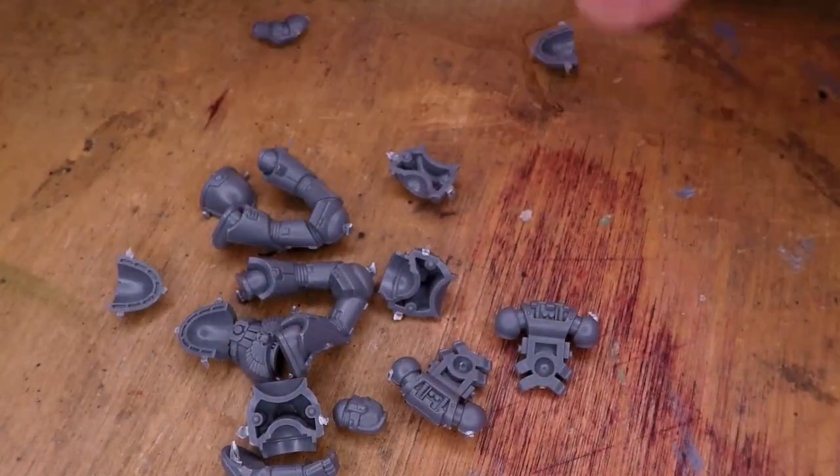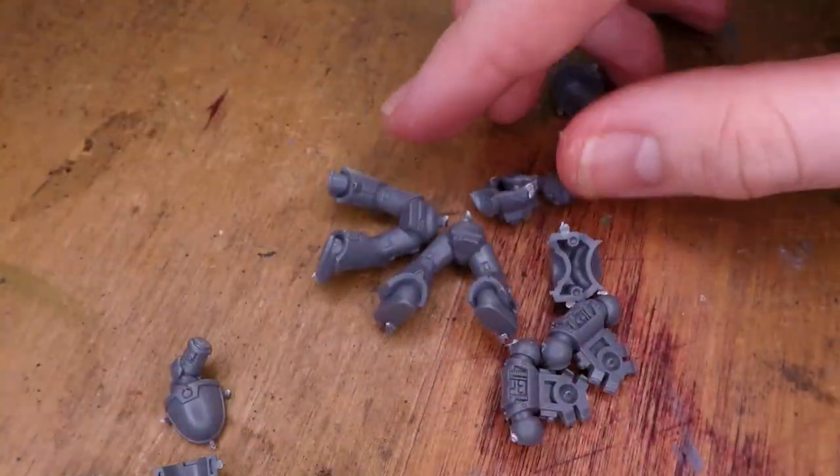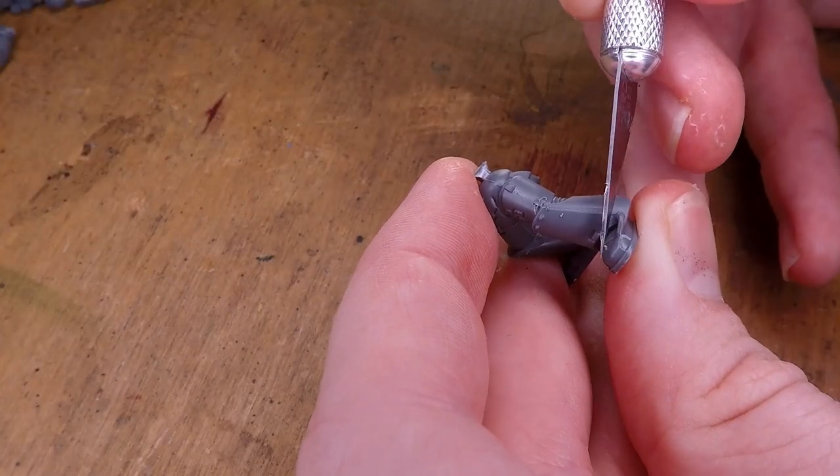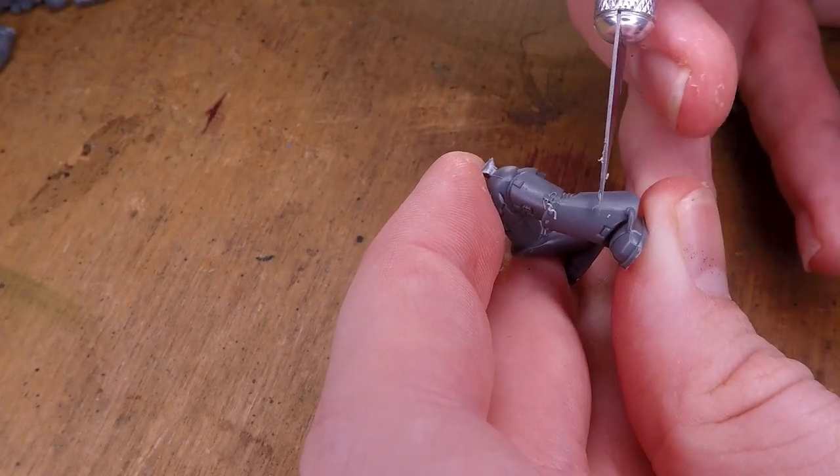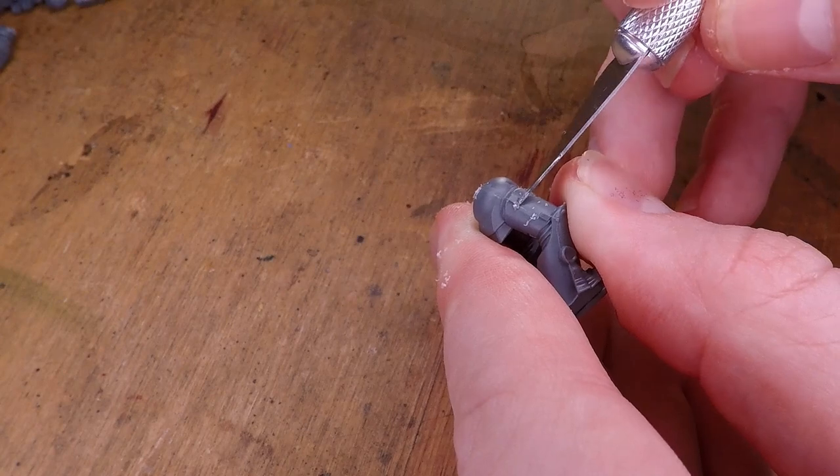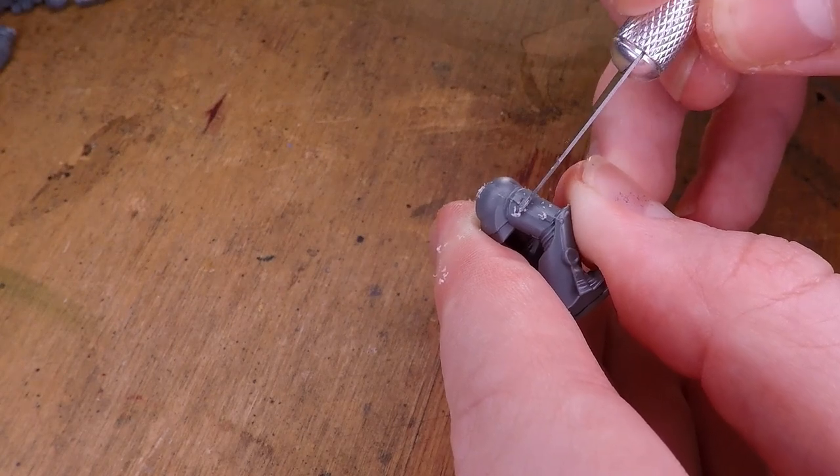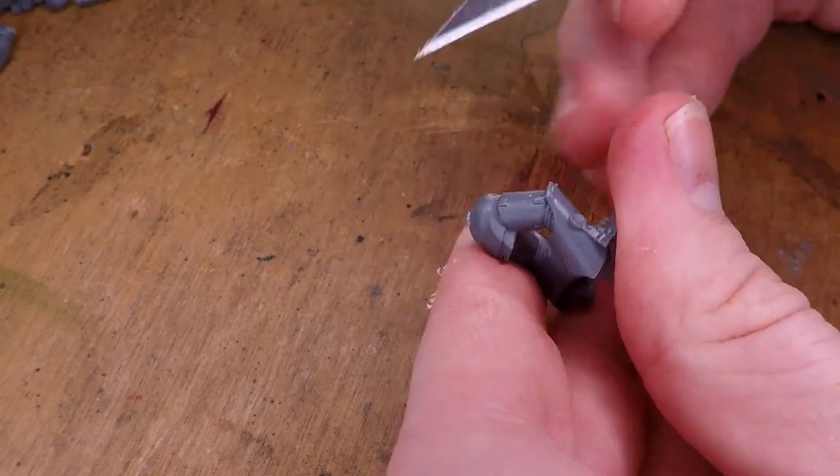The first thing that I do is get all the different pieces I'm going to need for the diorama, making sure to clean up any mold lines with a craft knife. The idea I had for this diorama was to have two Space Marines hanging off the edge of a cliff while being attacked by a large monster.